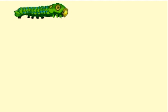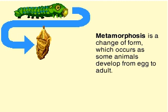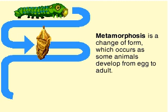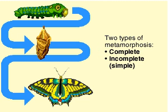In the development from egg to adult, some animals undergo a process called metamorphosis, a series of changes in the animal's form or structure. There are two types of metamorphosis: complete and incomplete.